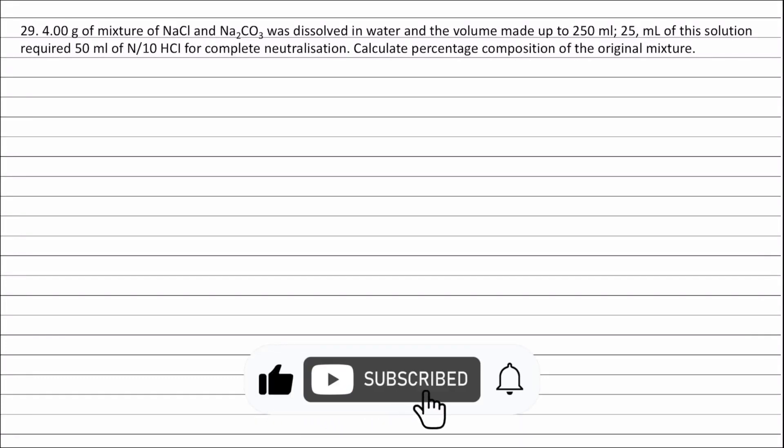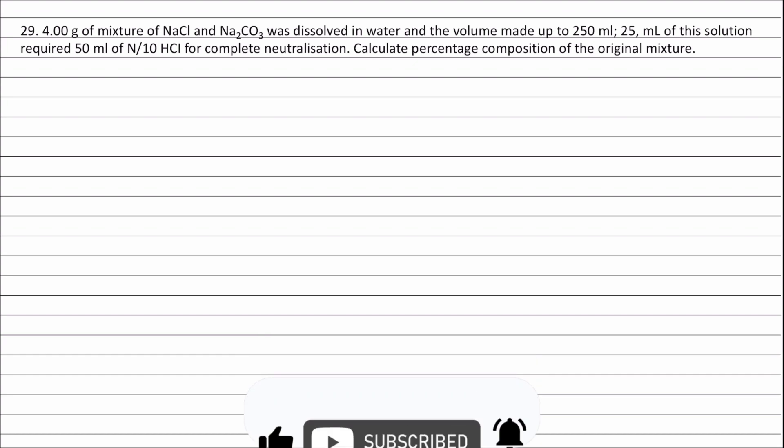Question 29. 4 grams of mixture of sodium chloride and sodium carbonate was dissolved in water and the volume made up to 250 milliliters.